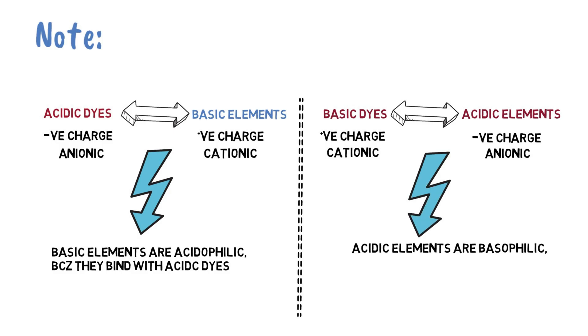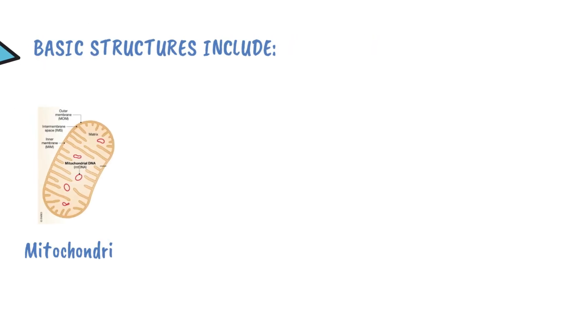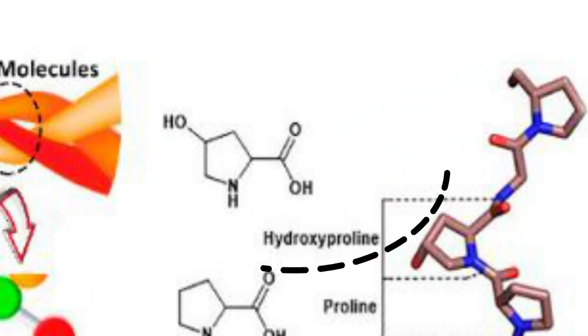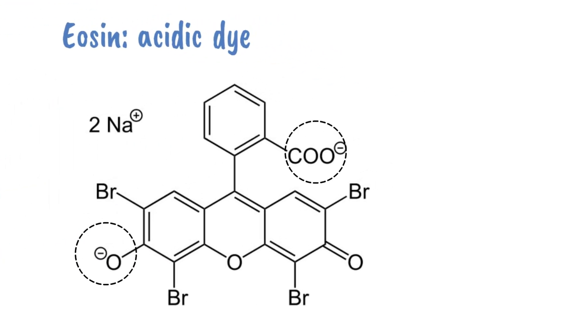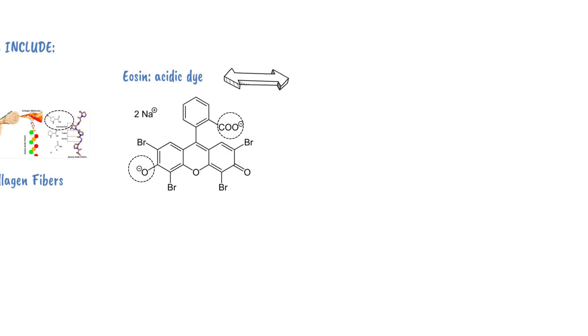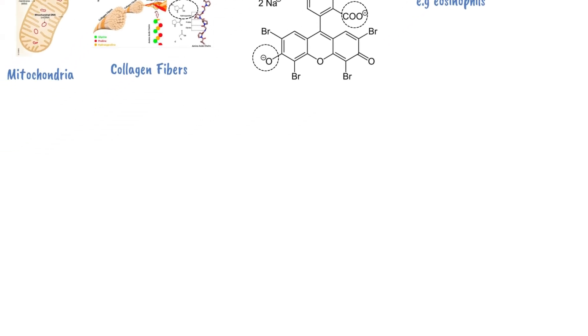Acidic structures are basophilic because they bind or stain with basic dyes. For example, basic positively charged structures include mitochondria and collagen fibers, because they are rich in positively charged amino acids. Note that examples of acidic dyes include eosin — that's why the term eosinophilia is used interchangeably with acidophilia. Other acidophilic components include the organic matrix of bone tissue, because it is rich in collagen type 1, which is rich in positively charged amino acids. So they are basic structures and thus bind with acidic dyes, making them acidophilic.